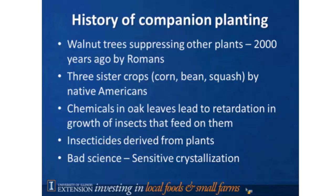Other historical examples: chemicals in oak leaves can retard the growth of certain insects that feed on them. Another example is insecticides derived from plants. The most common is the chrysanthemum, the pyrethrum daisy, which contains a naturally occurring insecticide called pyrethrum, still used by organic producers. The most common commercial form is a product called Pyganic, an insecticide derived from plant extracts of the pyrethrum daisy — an ornamental found in many catalogs — and it's a pretty decent insecticide.